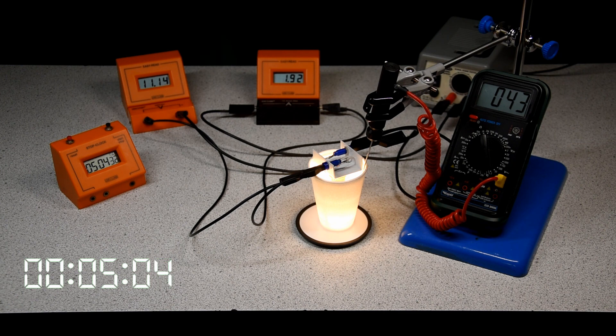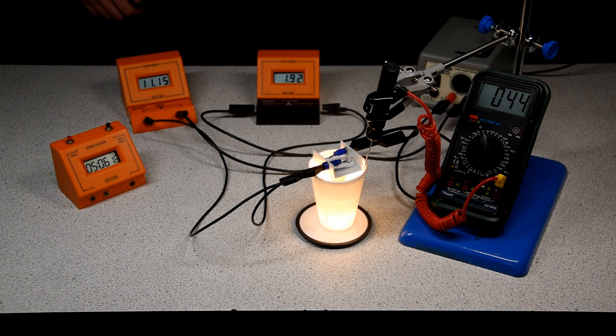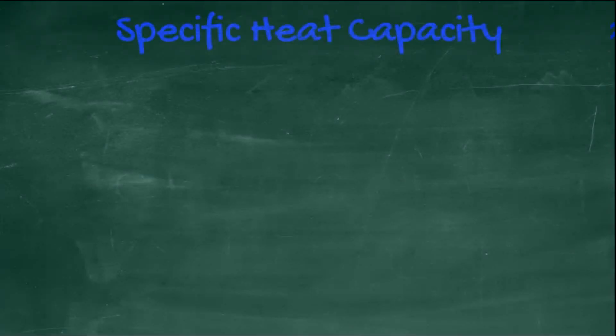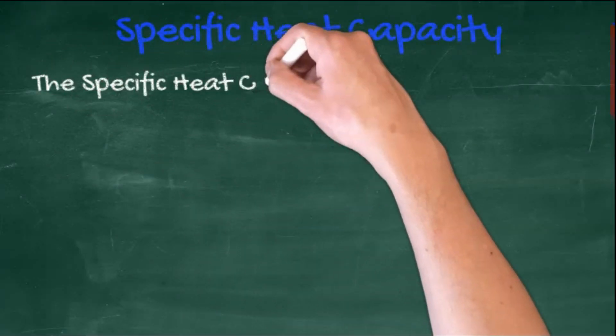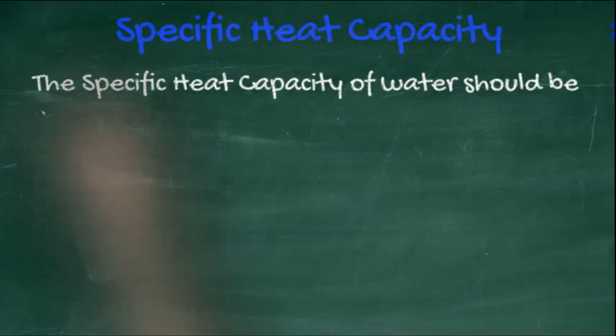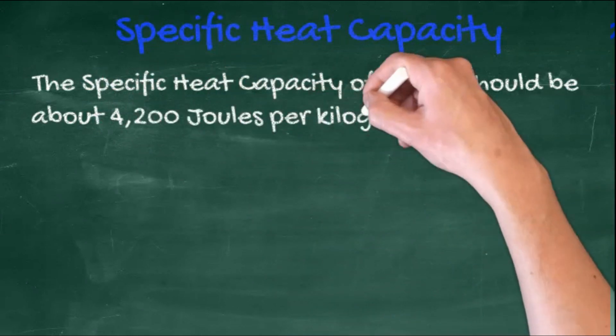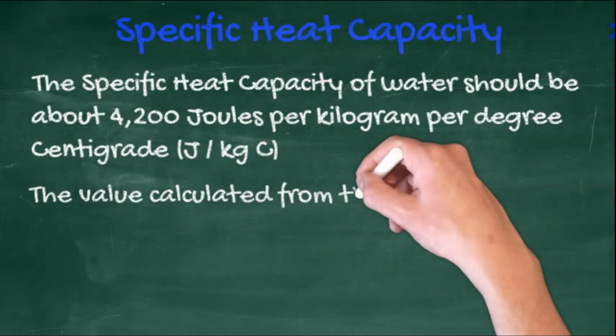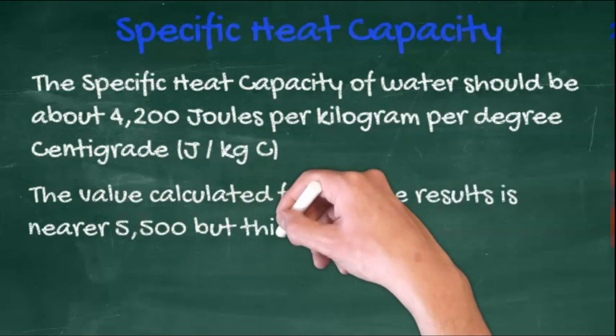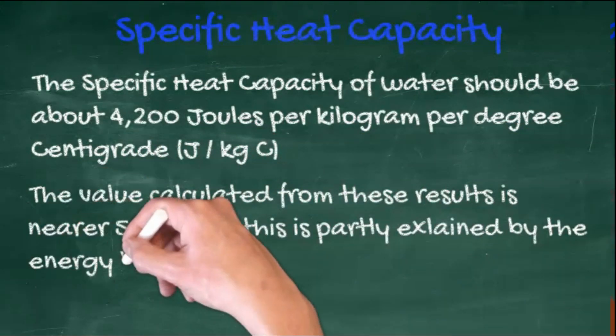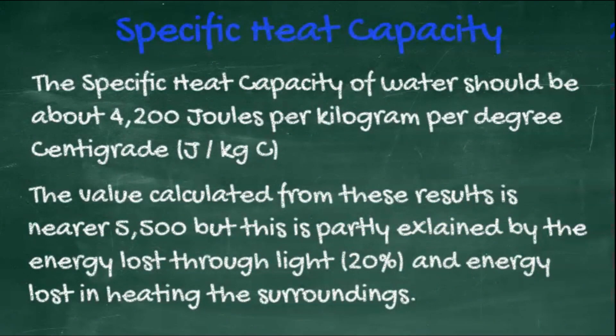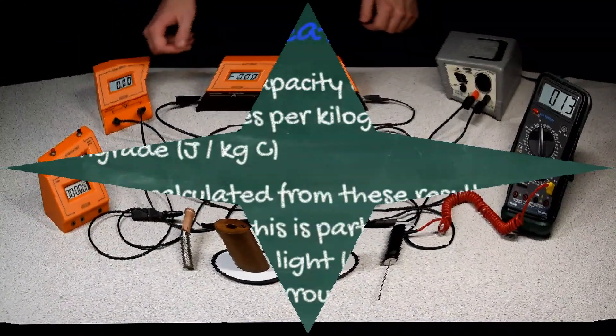The formula delta Q equals m c delta theta is given to you, and you simply need to remember that delta Q is change in energy and delta theta is change in temperature. The specific heat capacity of water should be about 4200 joules per kilogram per degree centigrade. The value we calculated was nearer 5500, but this is partly explained by the energy lost through light, that's about 20%, and the energy lost to the surroundings in heating the air and the table.